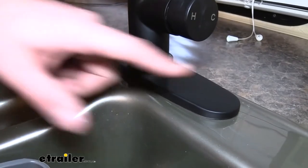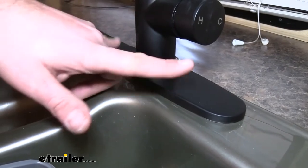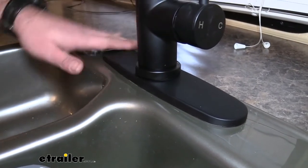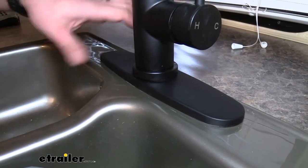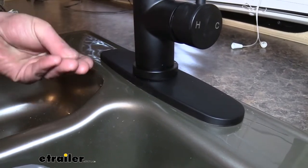Our original faucet was a three hole and what's nice is this actually includes this deck plate, so even though it's a single hole it's going to cover up your old ones. It also has nice foam on the bottom side so when you tighten it down it's going to compress.